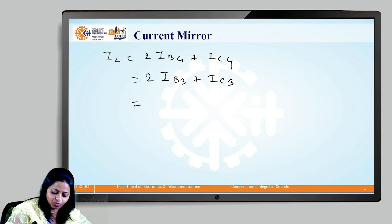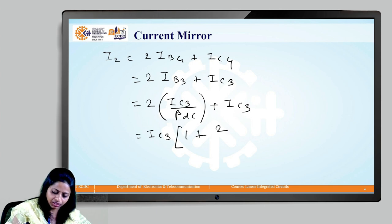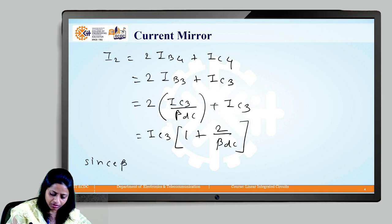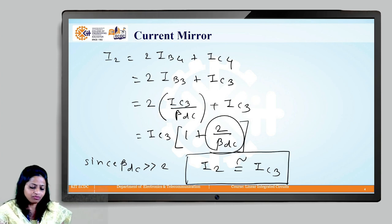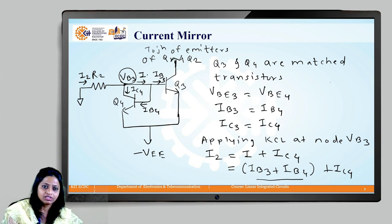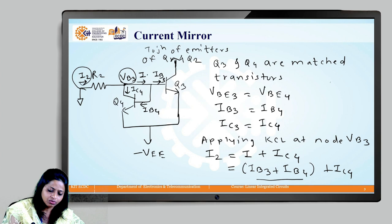This IB in terms of IC, if we want to express it will be IC3 by beta plus IC3. That is IC3 into bracket 1 plus 2 by beta DC. Now, since the value of this beta DC is much much higher than this 2, we can say that I2 is nearly equal to IC3. We will neglect this term 2 by beta DC. Therefore, I2 will be equal to IC3.